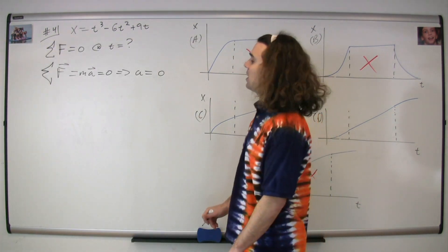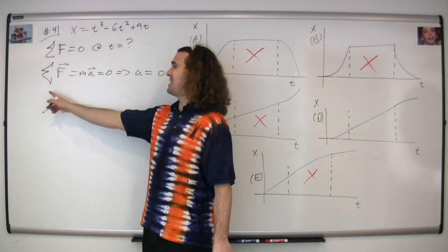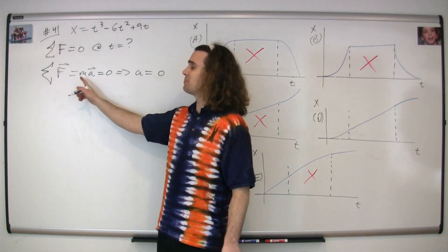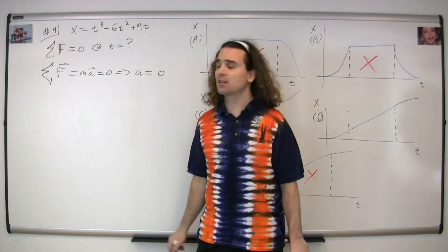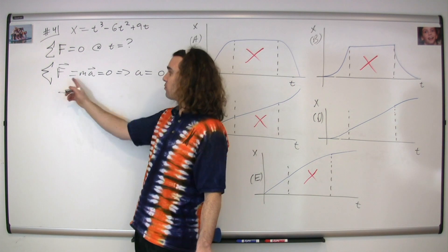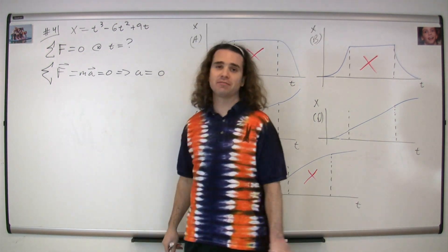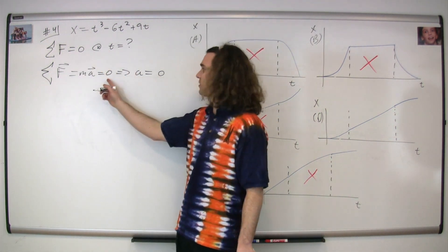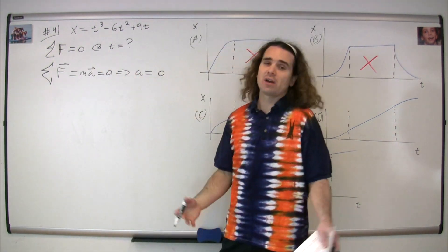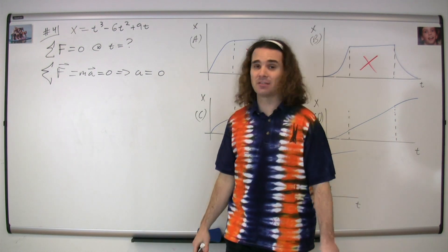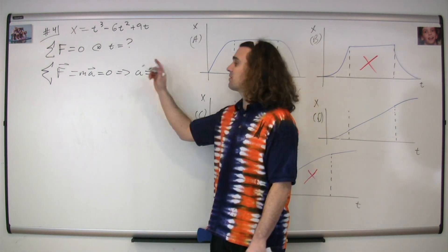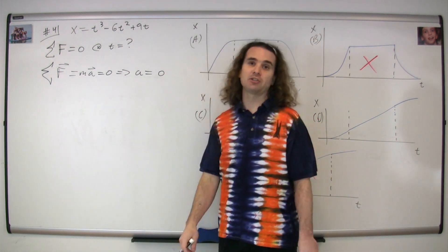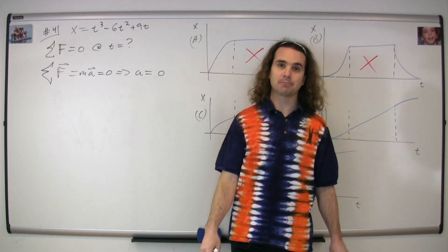Newton's second law states that the net force equals mass times acceleration, where both force and acceleration are vectors. In the problem it's stated that the net force is equal to zero. We're not going to have zero mass for a locomotive, therefore the acceleration is equal to zero.